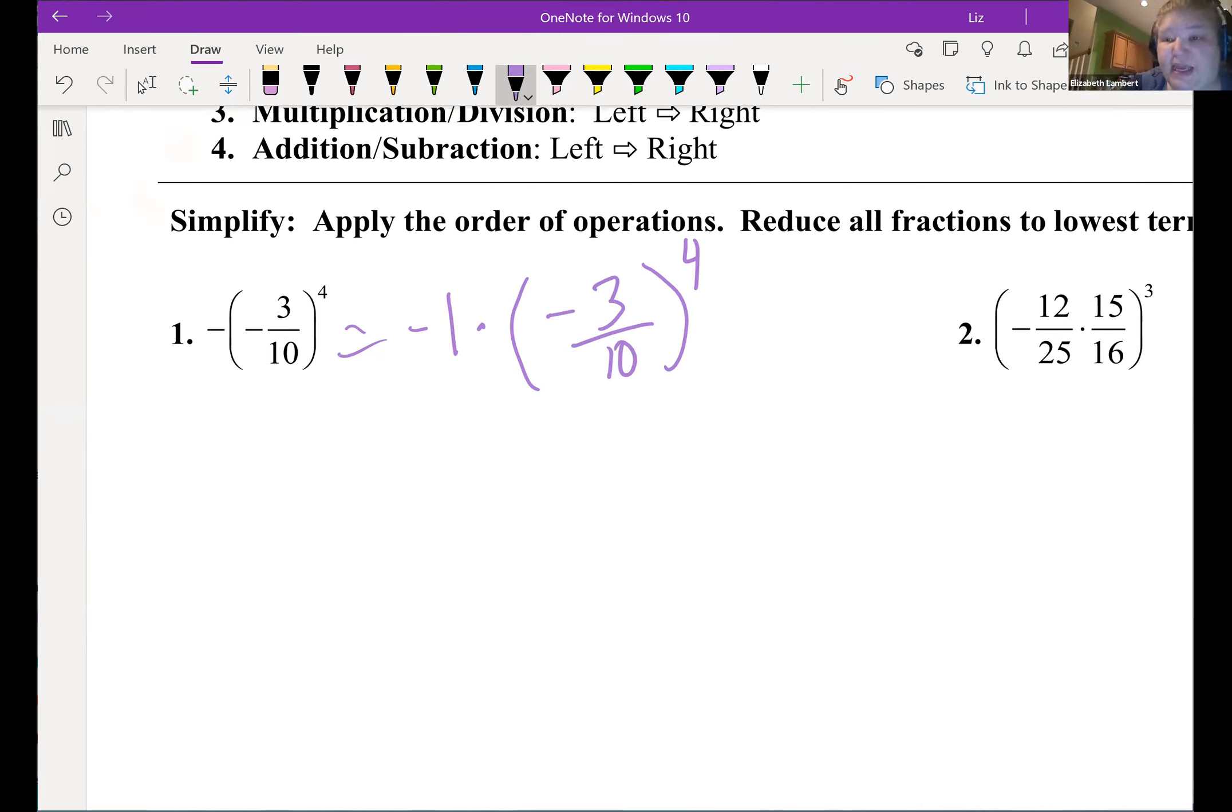Alright, so that means that's going to happen on the multiplication step. Then over here, the negative three tenths raised to the fourth power - so inside we have negative three over ten. That is technically a division. We could divide that and get the decimal, but we can also think of it as a number itself. So negative three tenths as a number raised to the fourth power is negative three tenths multiplied by itself four times.